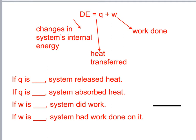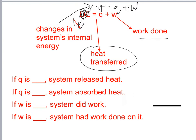Now let's look at this: delta E equals the heat transferred plus the work done. Changes in the internal system energy — delta E — equals Q, which is the heat transferred, plus the work done.